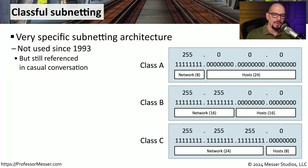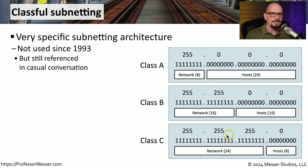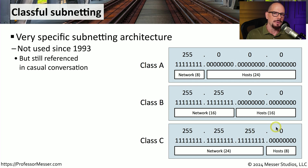Anything that is a class A address has eight bits assigned for the network address and 24 bits associated with the host address. This means that the subnet mask for a class A address would be 255.0.0.0. A class B address default subnet mask is 255.255.0.0, and the default subnet mask for a class C address is 255.255.255.0.